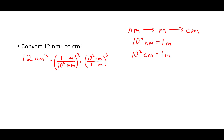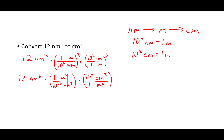Now let's distribute out those cubes so it's easier to cancel everything out. We have 12 nanometers cubed times: one cubed is just one, meters cubed over 10 to the 9 raised to the third power — which is 10 to the 27, power of a power — nanometers cubed. Times: 10 to the 2 raised to the third power is 10 to the 6, centimeters cubed, divided by 1 cubed, which is just 1, meters cubed. Now we can easily see that nanometers cubed over nanometers cubed cancels, meters cubed over meters cubed cancels, and we're going to be left with just centimeters cubed.